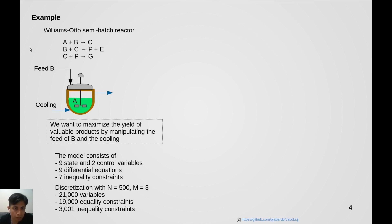As an example we have a semi-batch reactor where these reactions are taking place and we want to maximize the yield of valuable products by manipulating the feed of the reactant B and the flow of the cooling water.